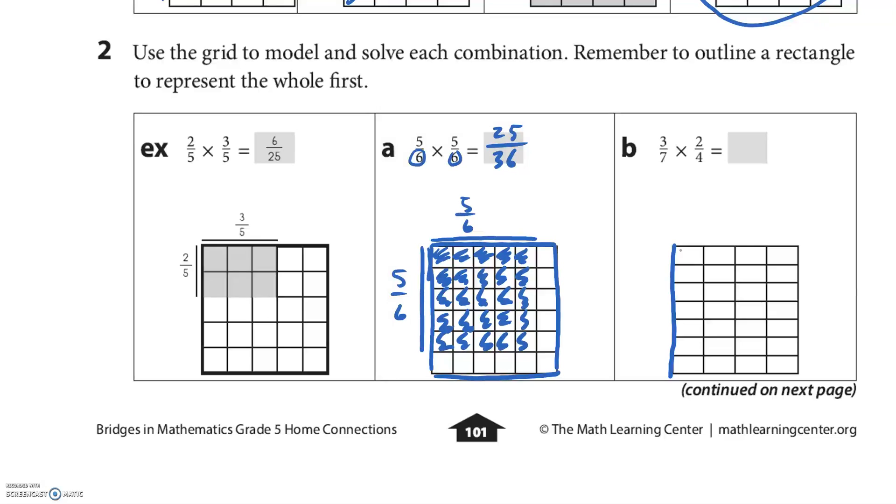25/36. The next one, the whole thing they've already set it up for us, so it's kind of a funny one. Outline the whole, but the whole is right here, that's 1, so our answer is gonna be less than 1. 3/7—three of them. And then 2/4, which is the same as half, but they just go to those 2/4. And then I'm just gonna color them all together.